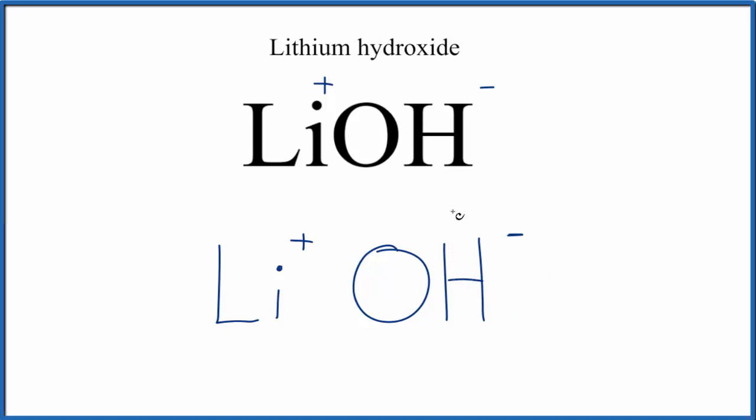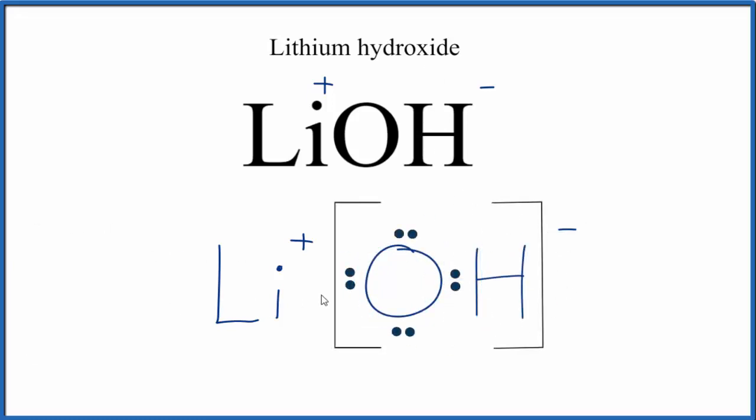Let's replace the OH- with the Lewis structure for the hydroxide ion. By convention, we should put brackets around this negative ion, and often you'll see brackets around the positive ion as well.